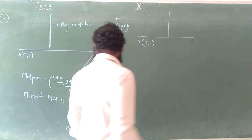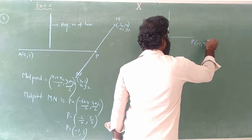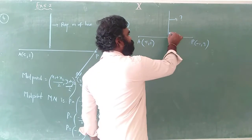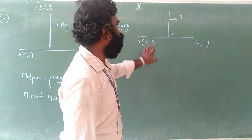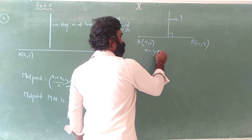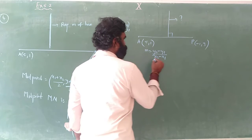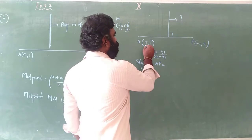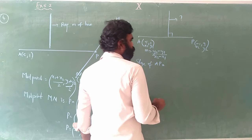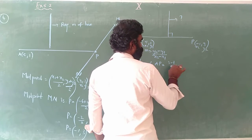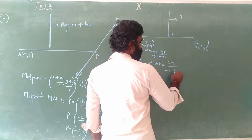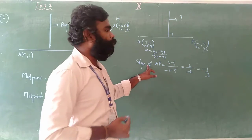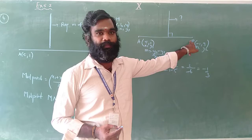Now I have found point P as (-1, 3). Next, I need the slope of line AP. Using the slope formula — (y2 - y1)/(x2 - x1) — with the coordinates, slope of AP = (3 - 1)/(-1 - 1) = 2/(-2) ... which gives slope of AP = -1/3.